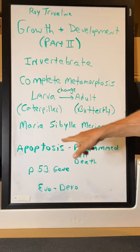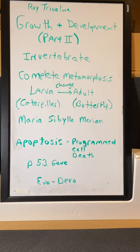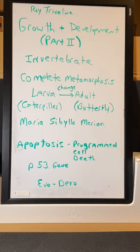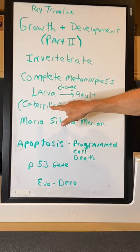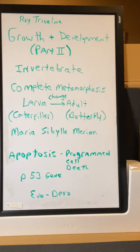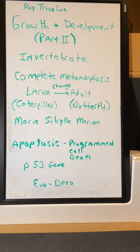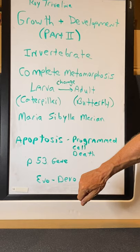I'd like to introduce you to Maria Sibylla Merian, from the 1600s. She was a woman scientist, which was very rare back then. She actually published a book and was one of the first persons ever to figure out that caterpillars and butterflies were the same species — they used to call them devil worms. She is the queen of entomology, the study of bugs, and she came up with the whole idea of complete metamorphosis. We're also going to briefly talk about apoptosis, the p53 gene and cancer, and the idea of evo-devo.